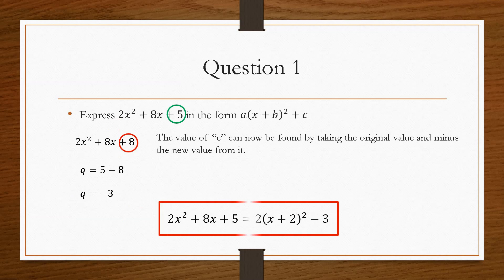which will give us minus 3. And then if we express that in the form, we get 2x squared plus ax plus 5 is equal to 2 bracket x plus 2 squared minus 3. And that's how you go about completing the square.